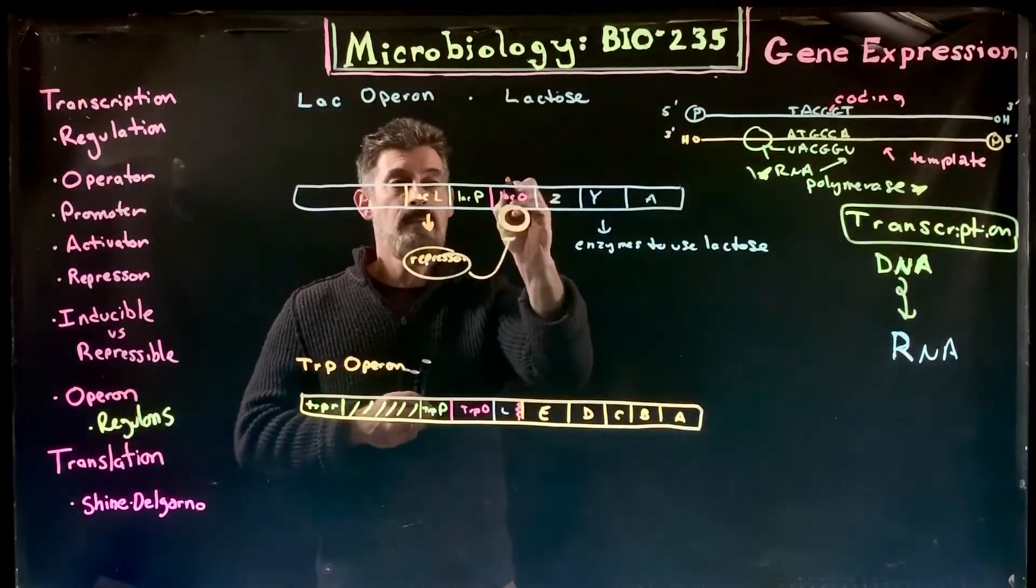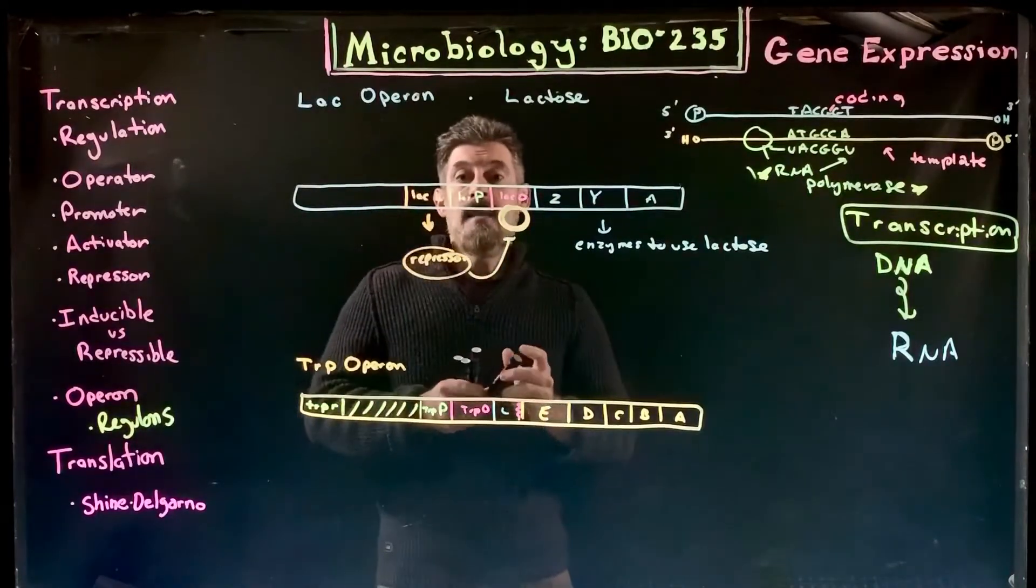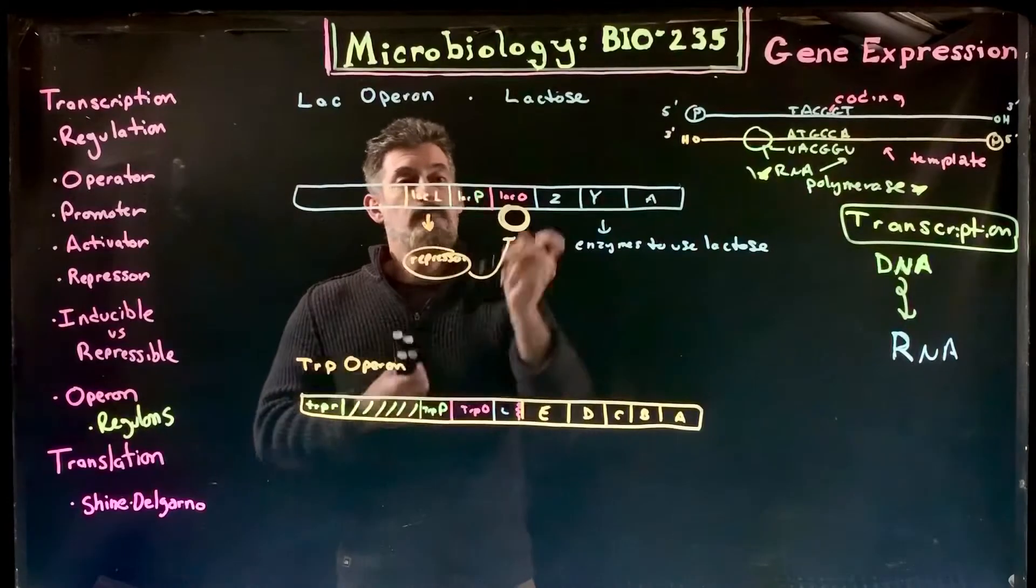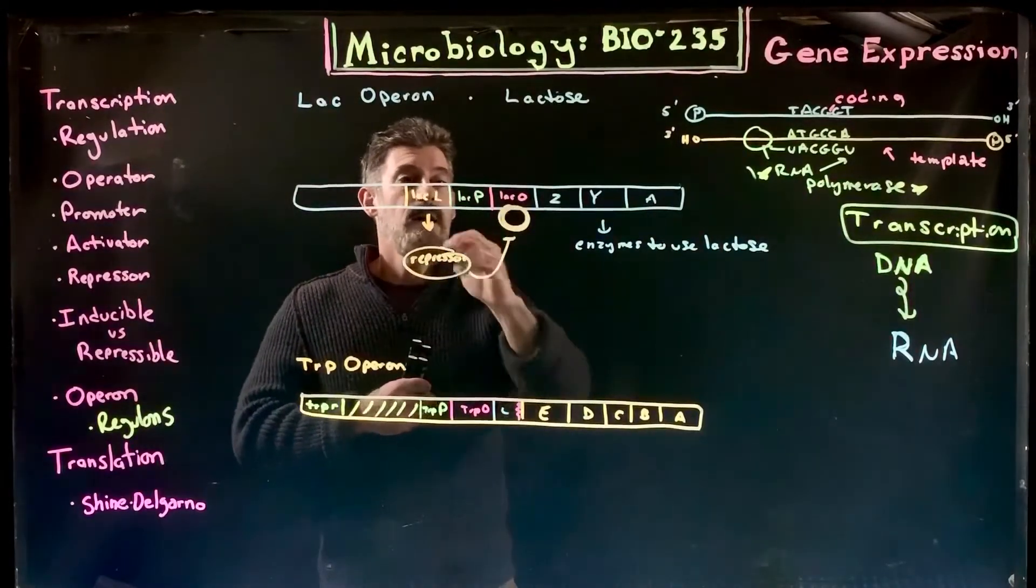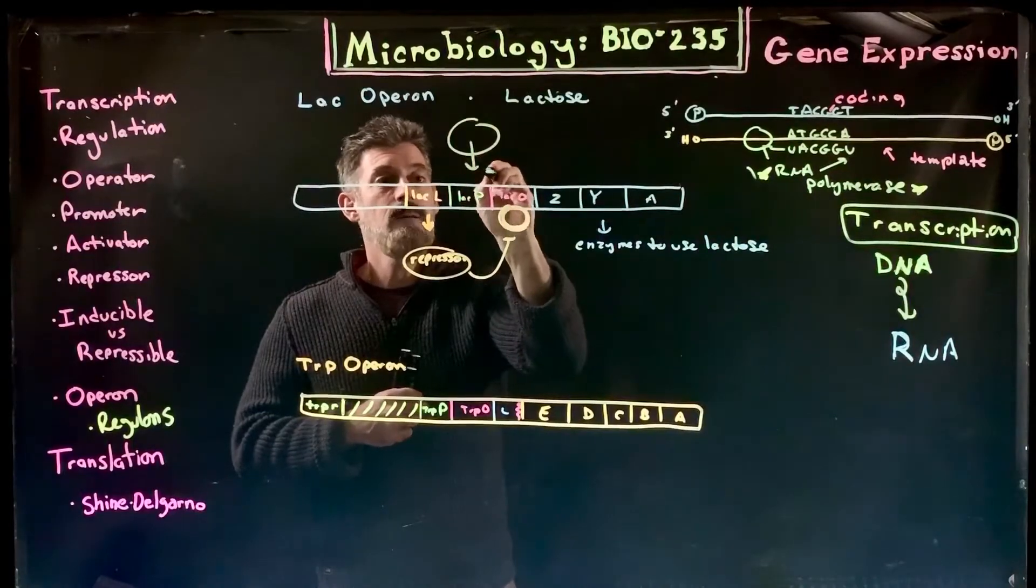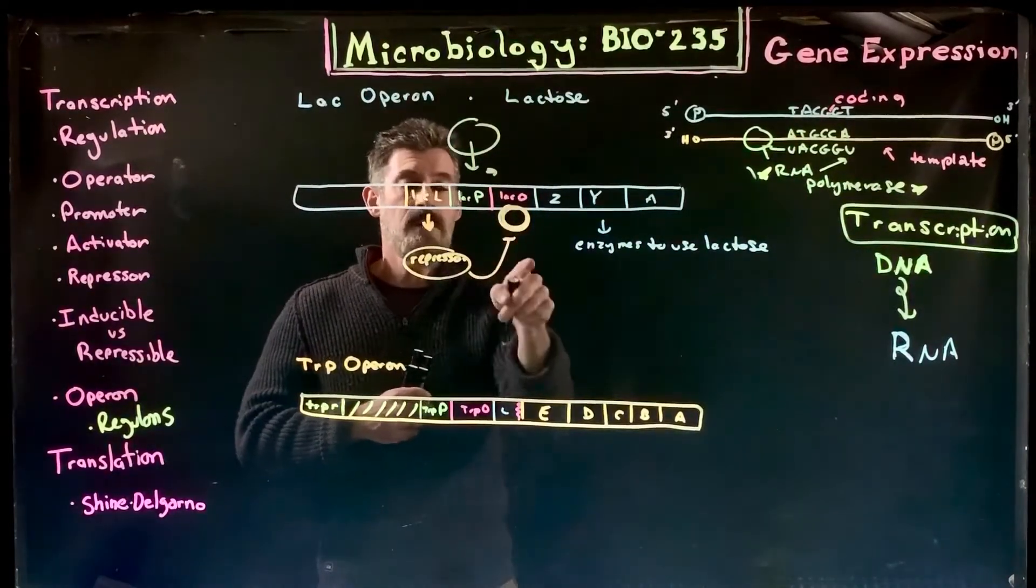The lac O is the lac operator. This here is the promoter—lac P for promoter, O for operator. It's shut down. RNA polymerase, if it tries to bind, won't be able to read because the repressor is there.